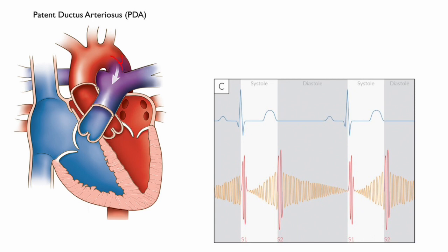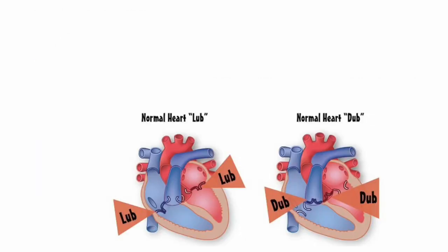Now what if the murmur happens all through systole and diastole? That indicates a continuous flow throughout the cardiac cycle, which means there is no valve involved — because the flow is continuous, it's not that at one phase a valve should be closed or open. That's the case of patent ductus arteriosus.